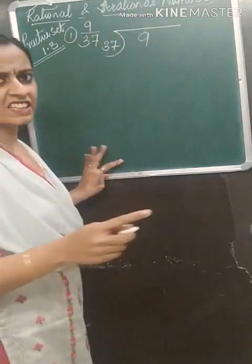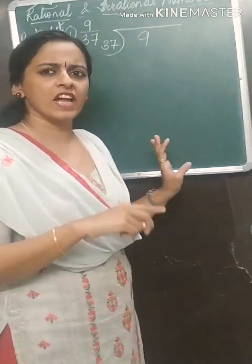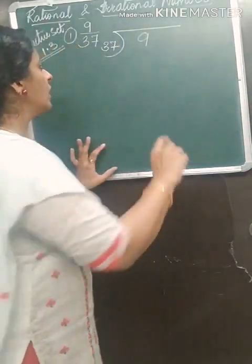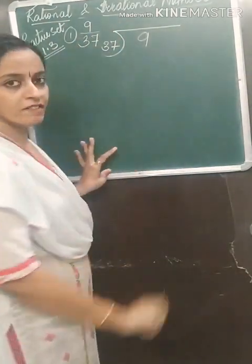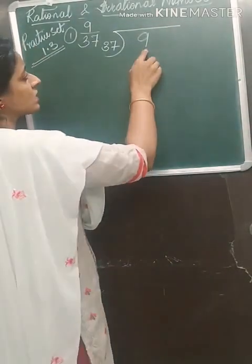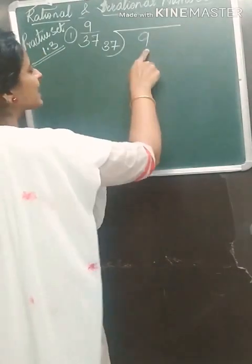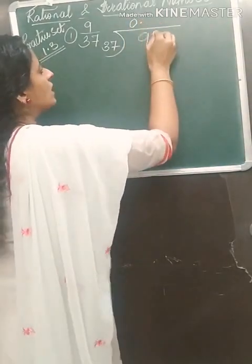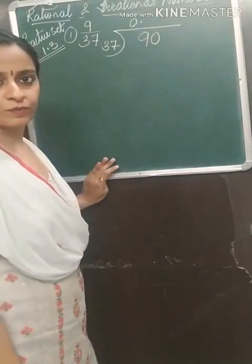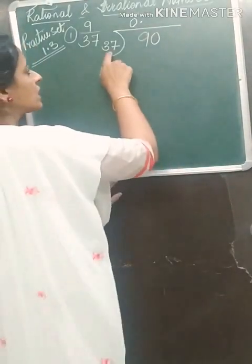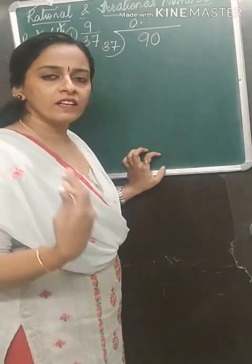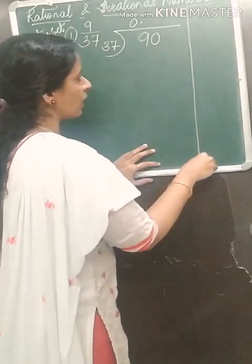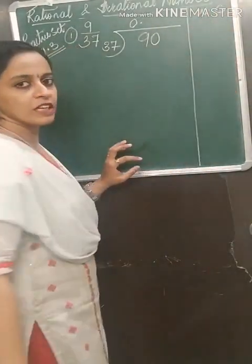Now 9 and 37 — 37 doesn't go in 9's table, so we will take the number as it is, we will not reduce it. Now we have to find out 37's table. The first digit is 9, which is less than 37, so we have to put a 0 point and here we will put a 0, making it 90. Make a separate working column.